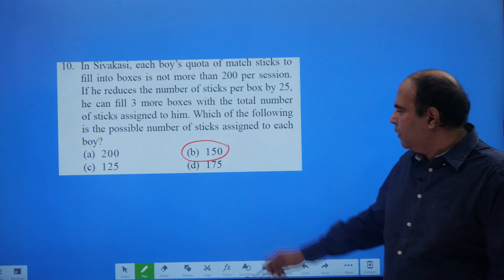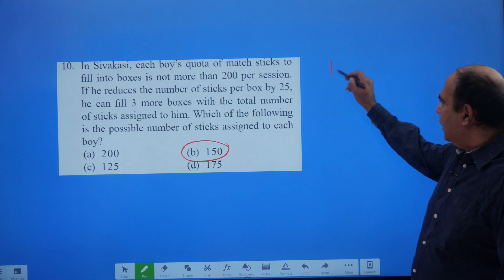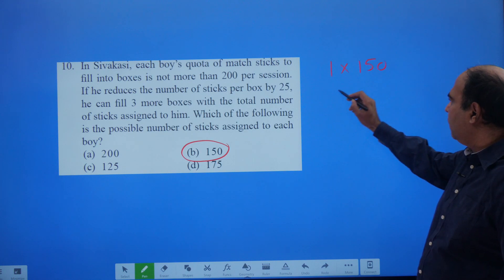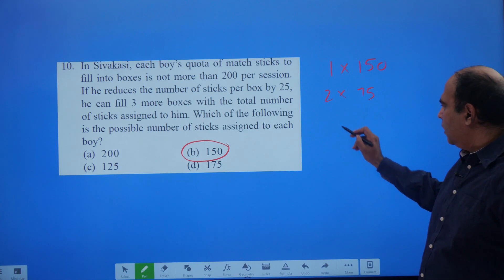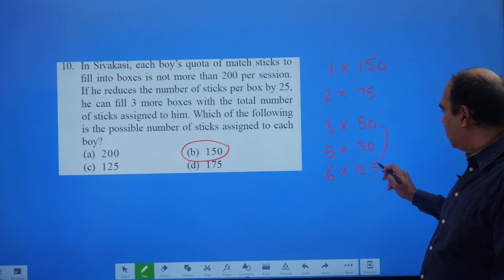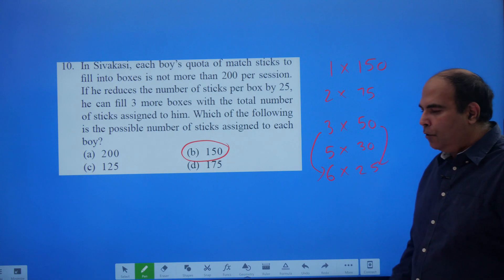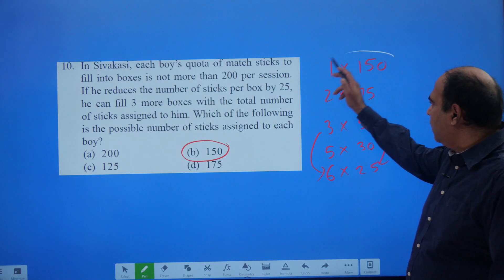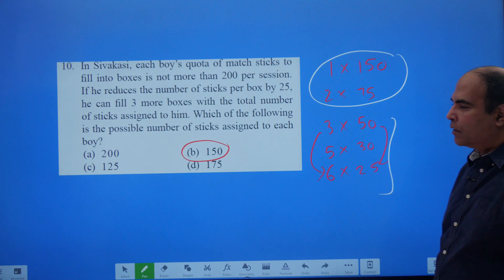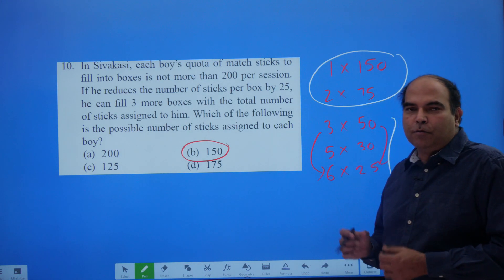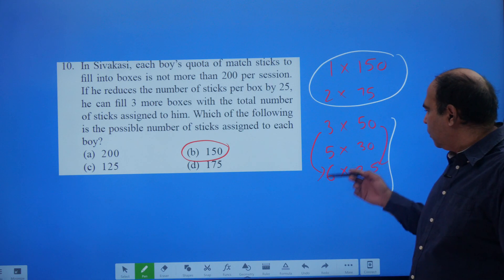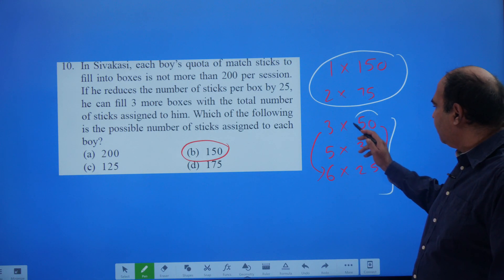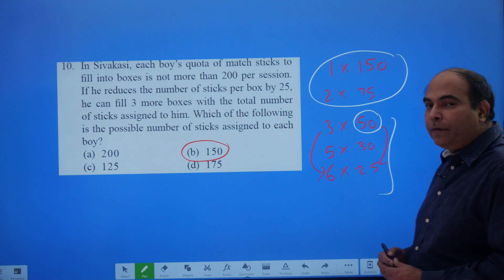If I pick up 150, you will be able to spot, and when you start writing the factor pairs, 1 into 150, 2 into 75, 3 into 50, 4 does not divide 150, 5 into 30, and 6 into 25, you spot the requisite pair here itself. And you need to understand that in such questions, the question is normally never about the first couple of factor pairs. It's about the middle factor pairs where the numbers start becoming smaller two-digit numbers that these numbers work.